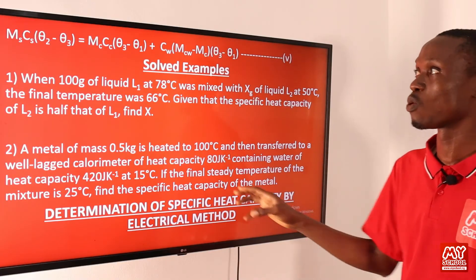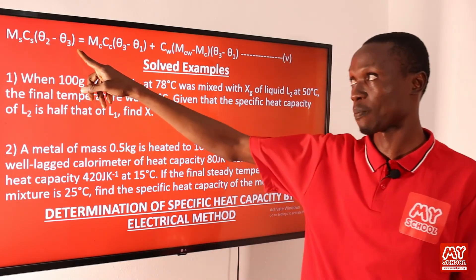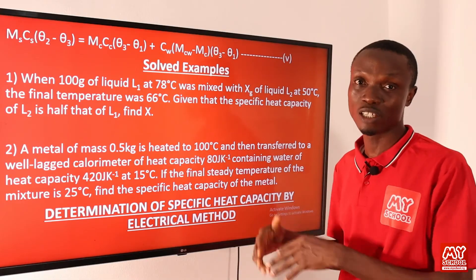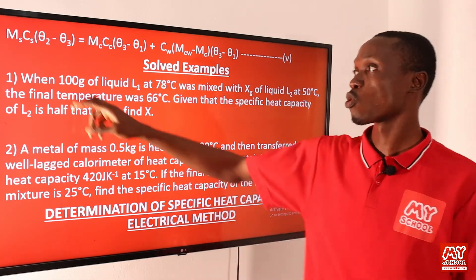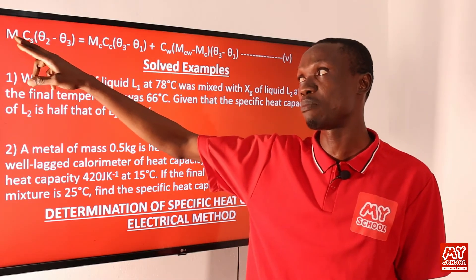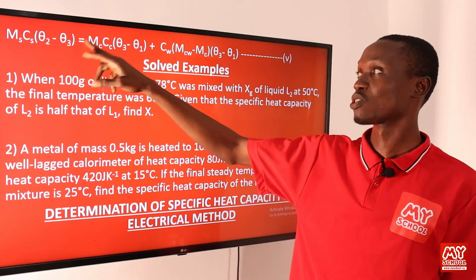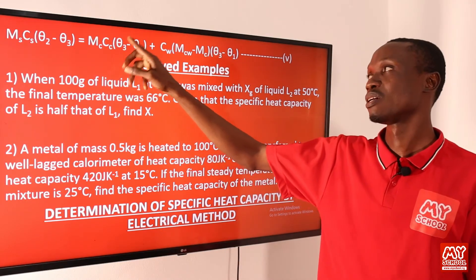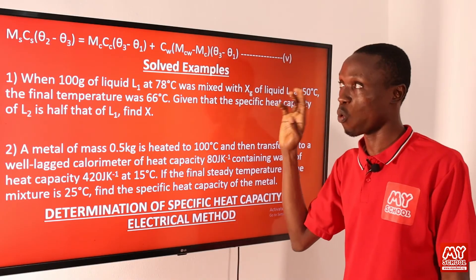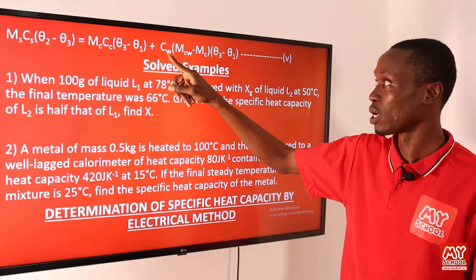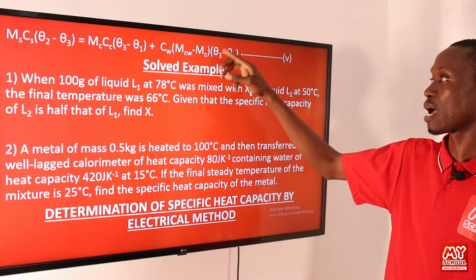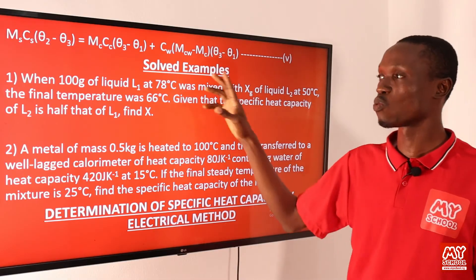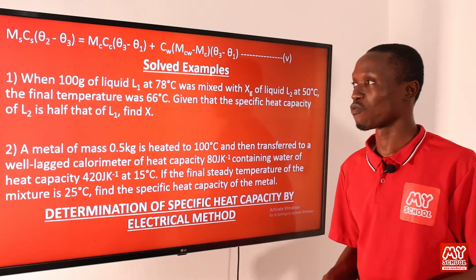Putting it all together mathematically: heat lost by the solid = m_s × c_s × Δθ = heat gained by calorimeter (m_c × c_c × Δθ) plus heat gained by water (c_w × mass of water × Δθ). This formula will be used to solve the following problems.